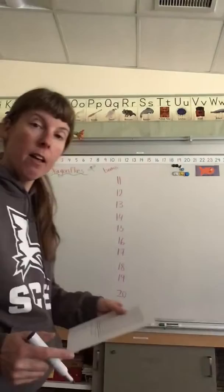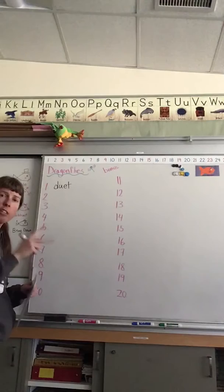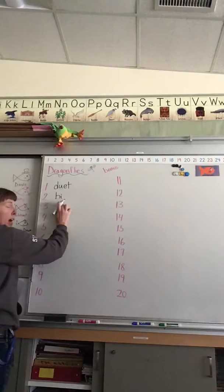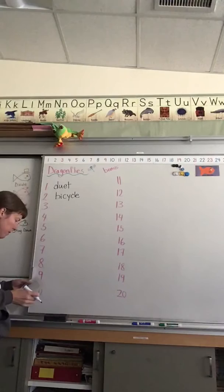Word number one, duet. So things with the 'du' in there often means there are two of them. So in a duet there are two people playing. Number two, bicycle. The 'bi' part also means two. So two cycles, a bicycle has two wheels. Notice how the Y makes the C say 'ss' instead of 'c'.